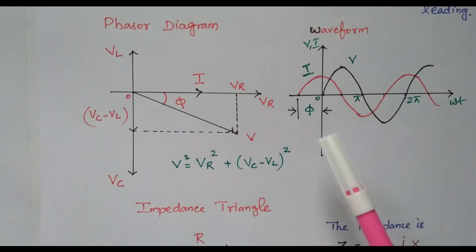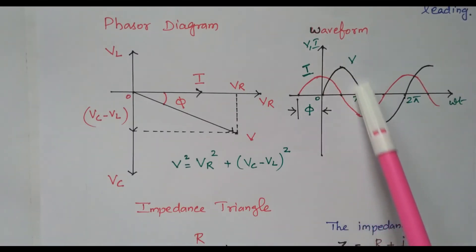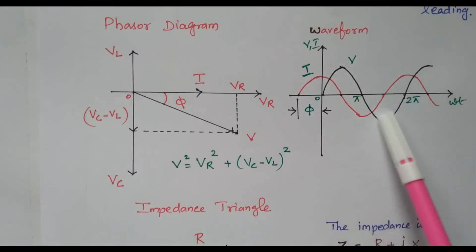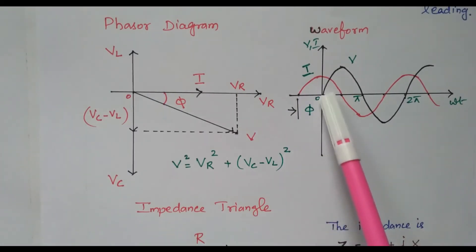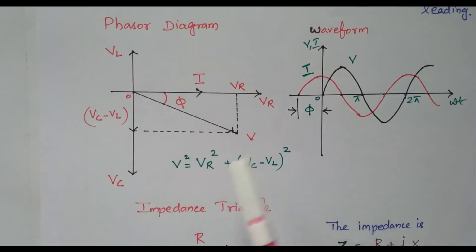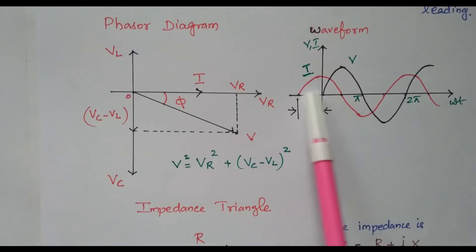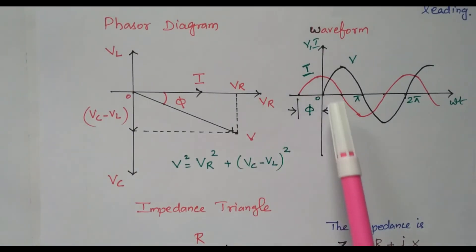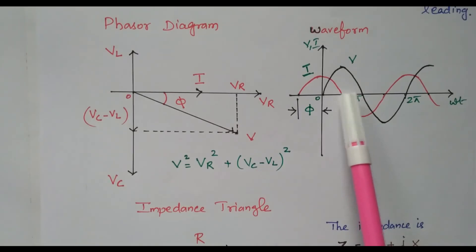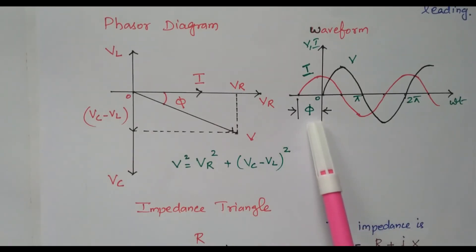Looking at the waveform: the voltage waveform starts at zero degrees, while the current starts earlier — leading — with a phase angle of phi. So there is a phase difference of phi between current and voltage, and it is leading. In the previous Case 2 (RL), the current started later; here in Case 3, the current starts earlier.